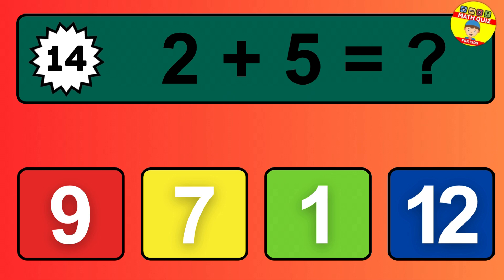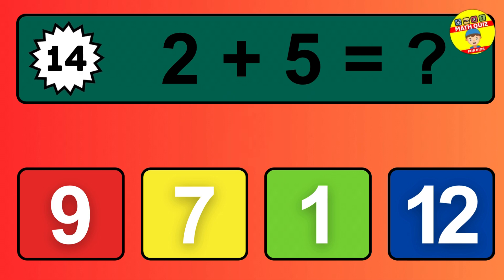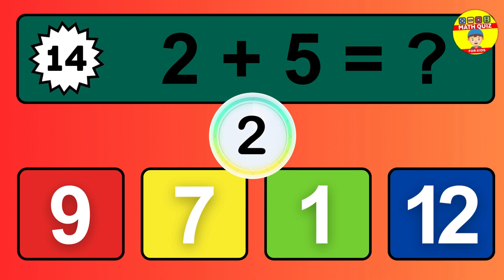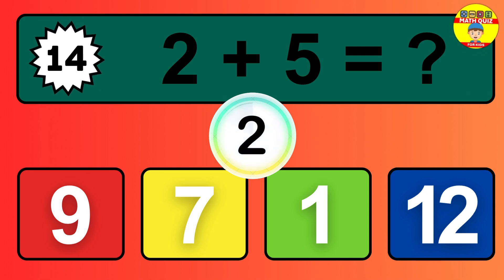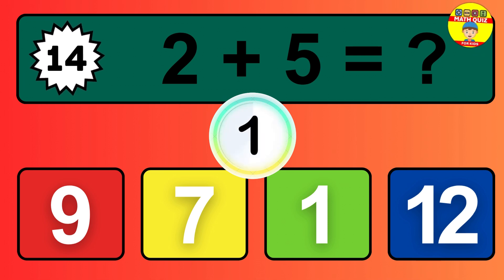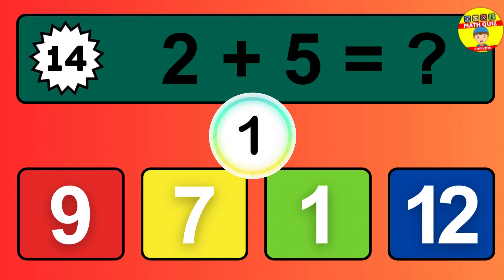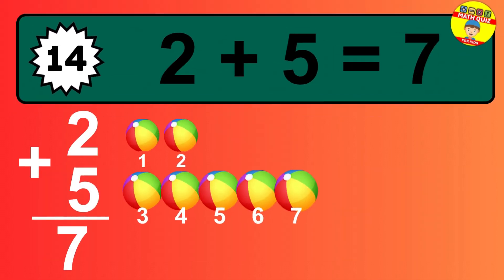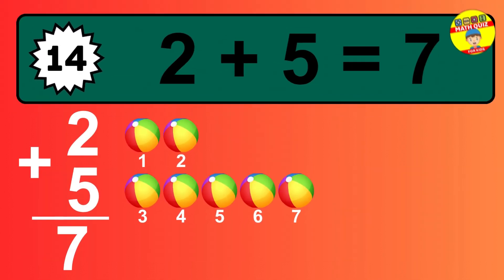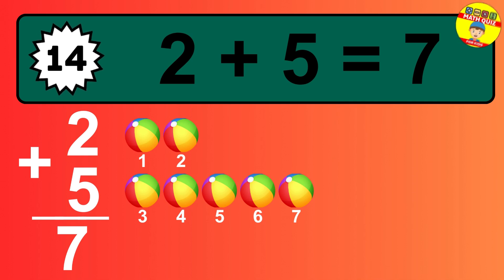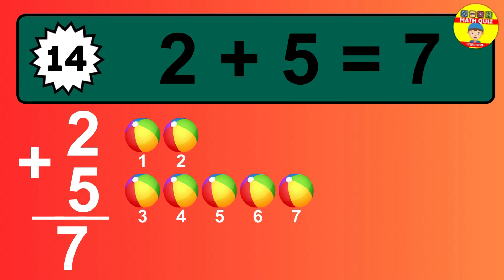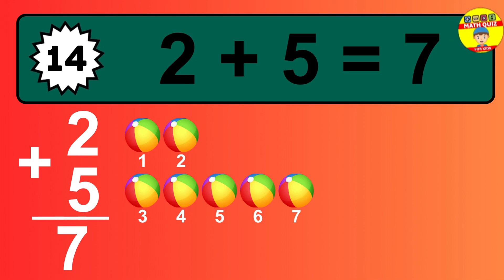Question 14. 2 plus 5 equals what? The answer is 2 plus 5 is 7. Let's count it. 1, 2, 3, 4, 5, 6, 7.